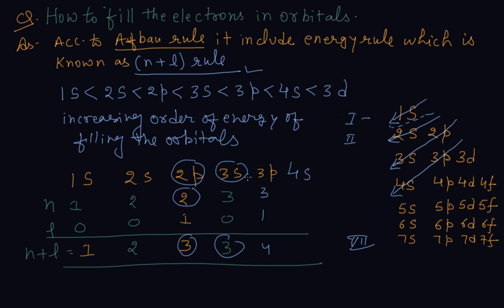So electrons go to 3p first, then 4s. After that comes 3d. For 3d, with the d orbital, l=2, so n+l=3+2=5.